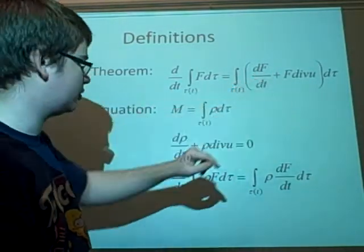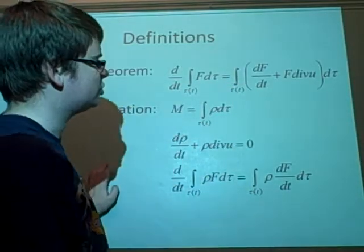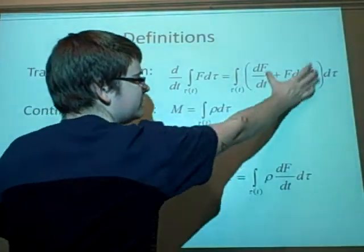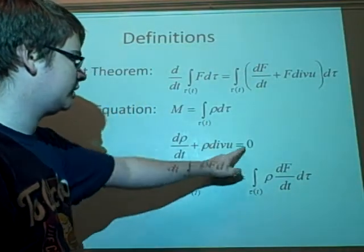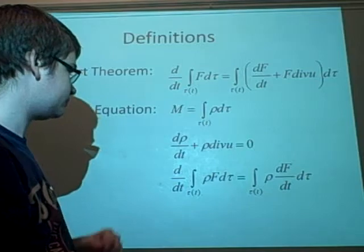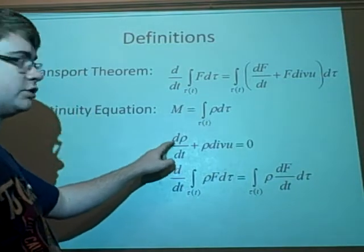Just replacing f with rho. And then because it's an integral equaling zero, the only way it can do that with d tau is if this part is equal to zero. So what we've done here is we've created this part and let it equal zero. And this is the continuity equation.